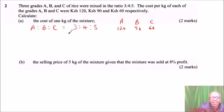We are required to find the cost of one kg of the mixture. Because this is the ratio of the mixture, we can take 3 kg of A and multiply by the cost of A which is 120, plus 4 kg of B at 90, and 5 kg of C costing 60 shillings.